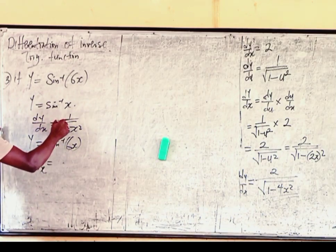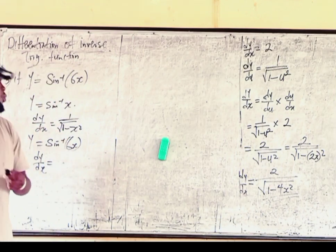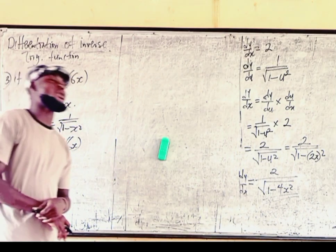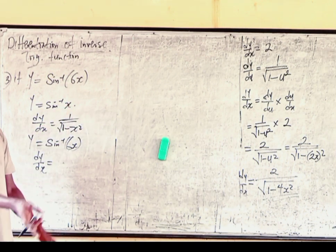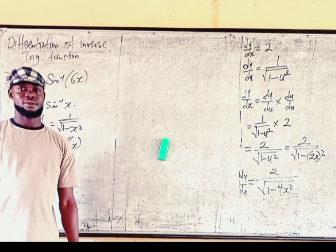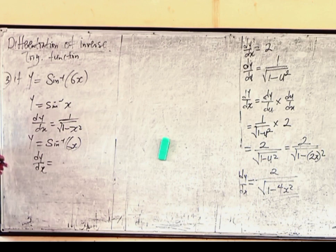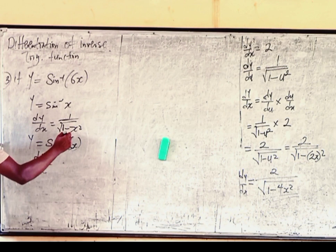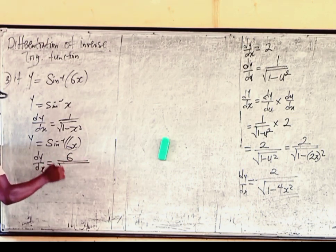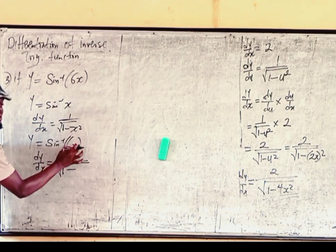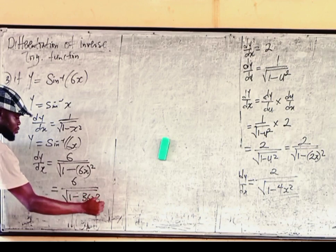Now if y equals sin inverse of 6x, here is how the shortcut works: the numerator comes from differentiating whatever is acting as the angle to sin inverse. The derivative of 6x is 6. The denominator stays as the square root of 1 minus that same expression squared. So we use 6x squared, giving 36x squared, and the answer is 6 over the square root of 1 minus 36x squared.